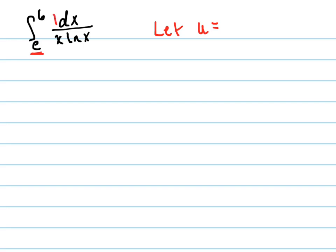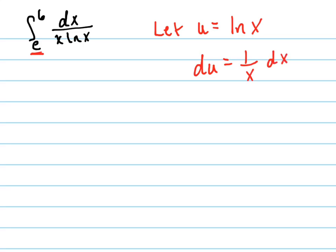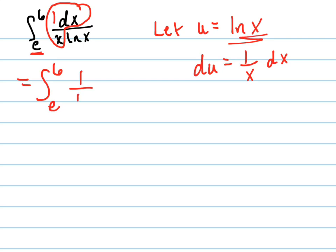I can see right here that I have 1 over x as part of that. So because I have 1 over x there, I'm going to let u be ln of x. Because the derivative of ln of x is 1 over x. So there is my 1 over x dx right there, and I can rewrite this integral with my substitution as 1 over the natural log of x, which is my u. So it's 1 over u times du.